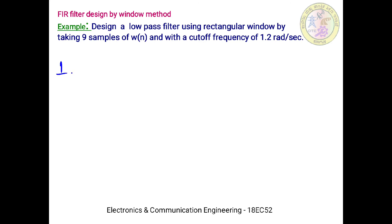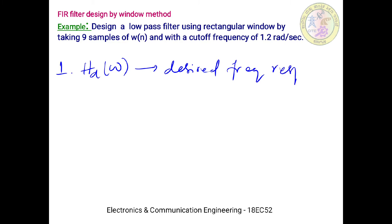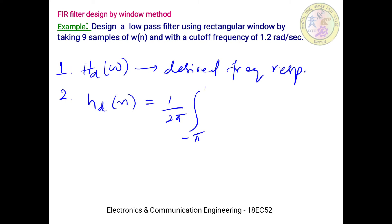The first step is to identify the desired frequency response HD(ω) of the filter — this is given with the problem. The second step is to calculate the inverse Fourier transform of HD(ω), which gives us HD(n), the time-domain version of the desired frequency response.